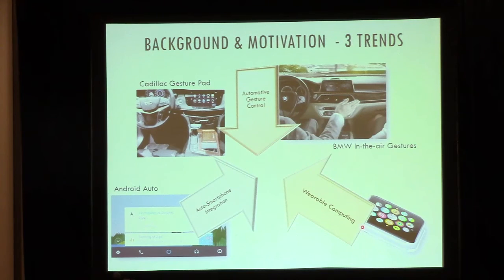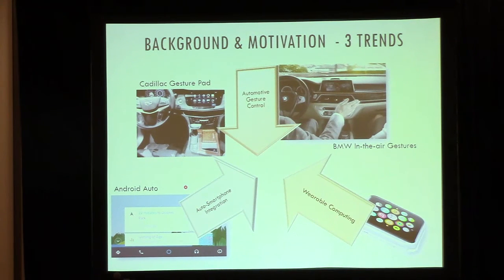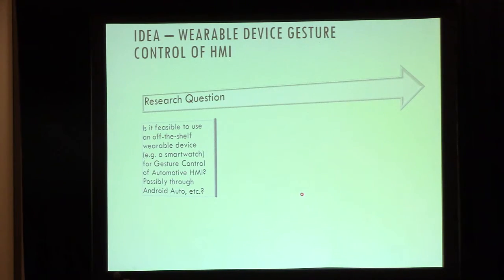So there are three trends you can probably observe fairly easily. Automakers' systems are becoming more complex, and they're looking at natural user interface technologies to reduce driver distractions — they want the driver to keep their eyes on the road. Voice recognition is there but it's not really working out well, so you're starting to see gesture control in cars. At the same time, Google and Apple are trying to take over the dash with products such as Android Auto and Apple CarPlay. And then there's this whole wearable computing revolution happening.